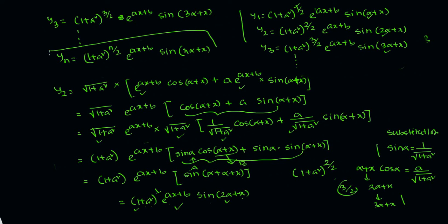The required nth derivative is: yn equals (1+a²)^(n/2) · e^(ax+b) · sin(nα+x), where sin alpha equals 1 by root(1+a²) and cos alpha equals a by root(1+a²). In this way you can calculate this problem.